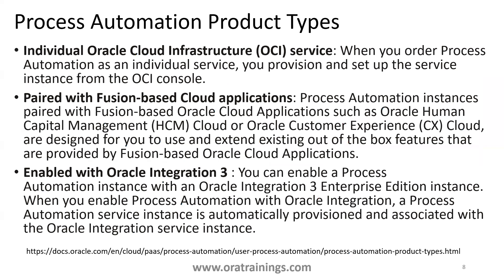Oracle Process Automation is offered in three ways. Starting with the last option: Oracle Integration Cloud has an offering that includes ICS, IPCS — earlier called IPCS, now called OPA. So in the Gen3 version of Oracle Integration Cloud, you have ICS, IPCS, as well as OPA.